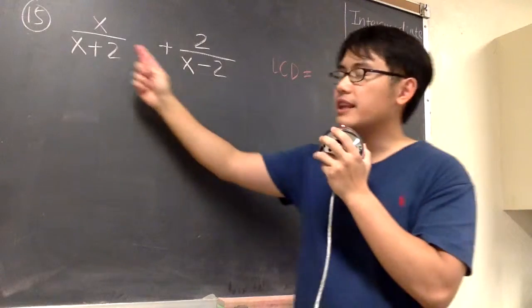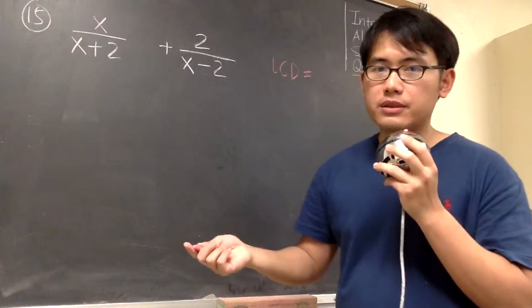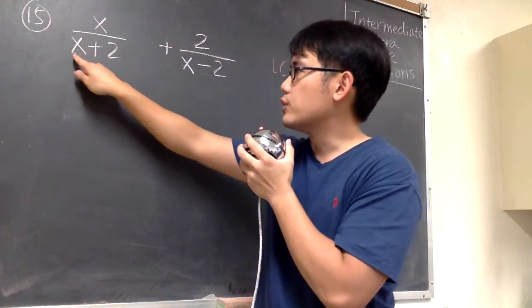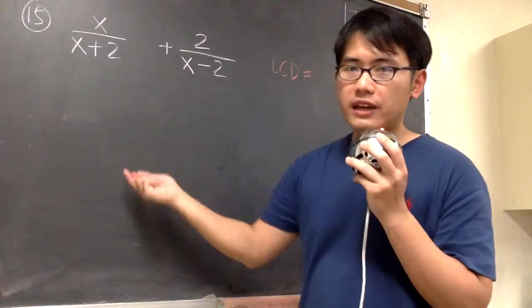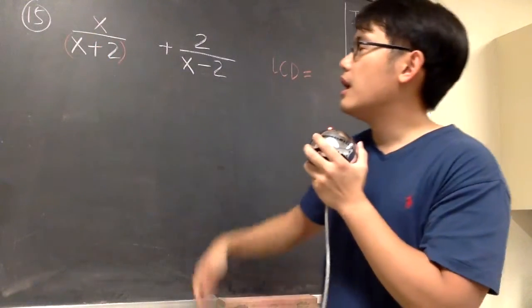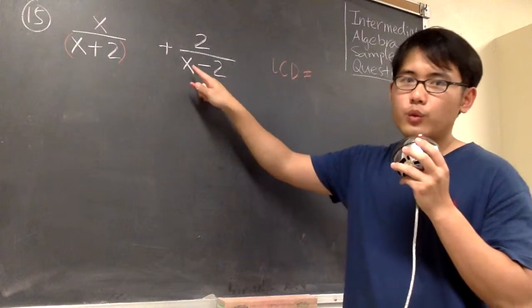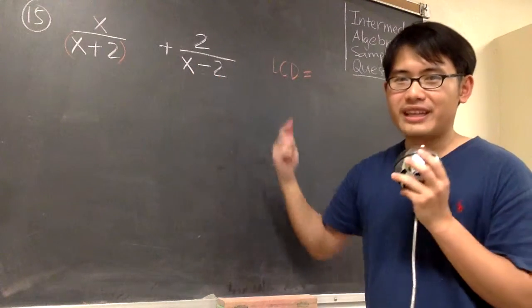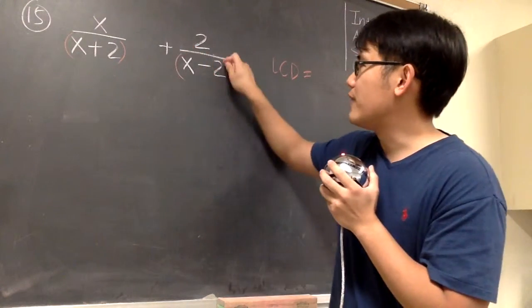And to do that, we look at the denominators and try to factor them out. But then for the first one, we just have x plus 2. We cannot factor that. So this is a factor by itself. Likewise, for the second one, we have x minus 2. We also cannot factor that. So this is also a factor by itself.